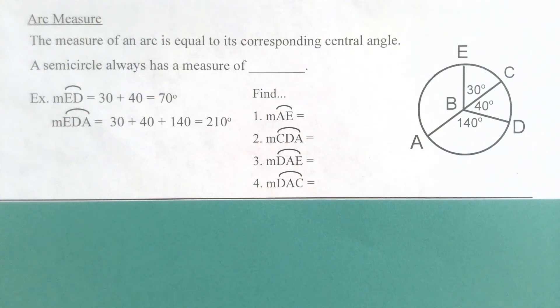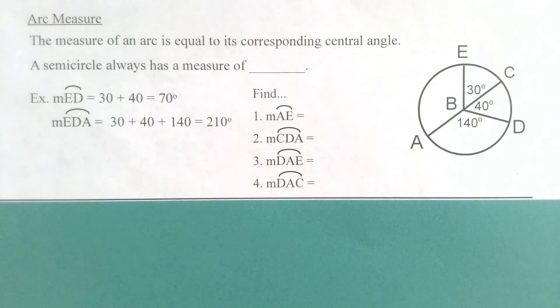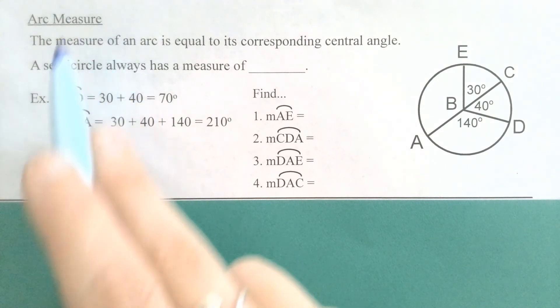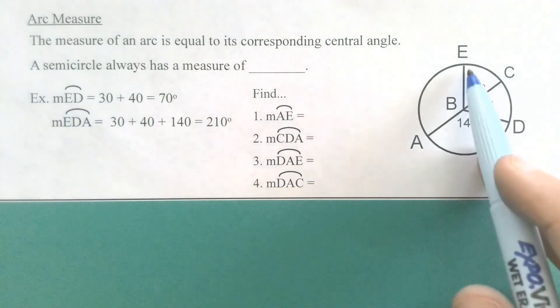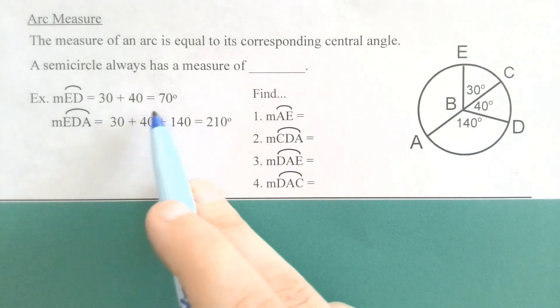Now that we know how to name an arc, we're going to jump into two different quantities that we will find with arcs. The first of those is the arc measure. Our arc measure is always equal to that arc's corresponding central angle. So if we're talking about arc ED, and we're still going to use that little M out front to say the measure of arc ED, and notice we call it the measure. If we're talking about arc ED over here, it's going to correspond to its central angle for ED. So since this is my arc ED, I would be looking at this central angle, I would add that 30 and 40 to say that the measure of arc ED is 70 degrees.